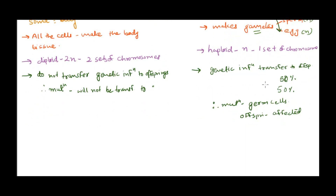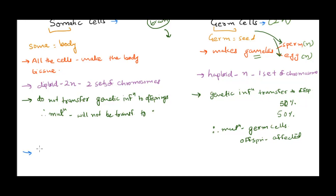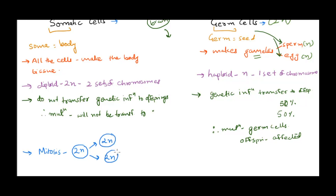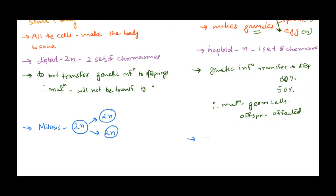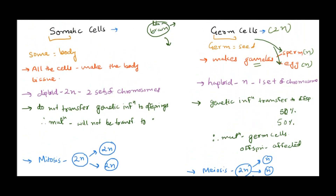The last important point is how they divide. Somatic cells divide by the process of mitosis — they just need to multiply and produce exact replicas. One somatic cell undergoes mitosis to produce two daughter cells, which are again diploid. In the case of germ cells, they follow meiosis, where they start with a diploid cell and form four daughter cells, each of which is haploid.